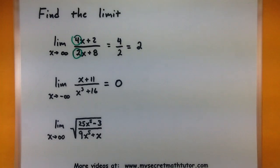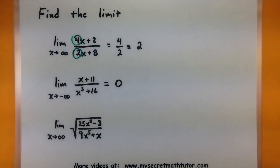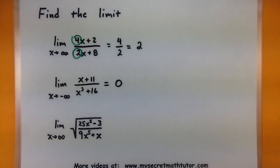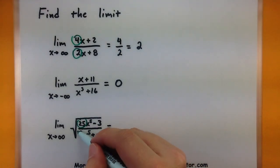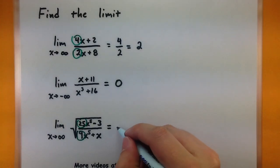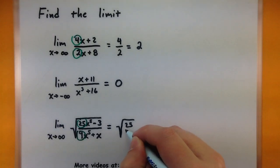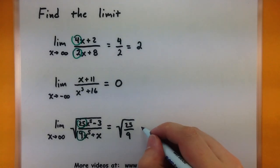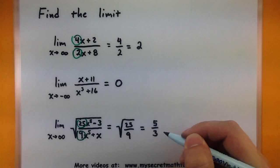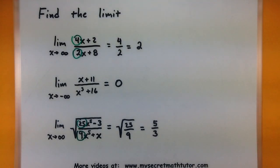One more — this one involves a square root. The limit as x approaches infinity of the square root of 25x to the 5th minus 3, all over 9x to the fifth plus x. The largest power in the numerator under the square root is x to the fifth, and the denominator also has x to the fifth. Since both are under the square root, they're effectively the same power. We take the leading coefficients: 25 over 9 under the square root, giving us 5 thirds. If you watch for these key differences, finding these limits is not too bad. Visit MySecretMathTutor.com for more videos.